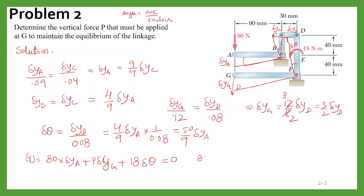So we can write 80 into delta y_a plus P, and in place of delta y_g, we can write 3 by 2 delta y_d, and plus 18.